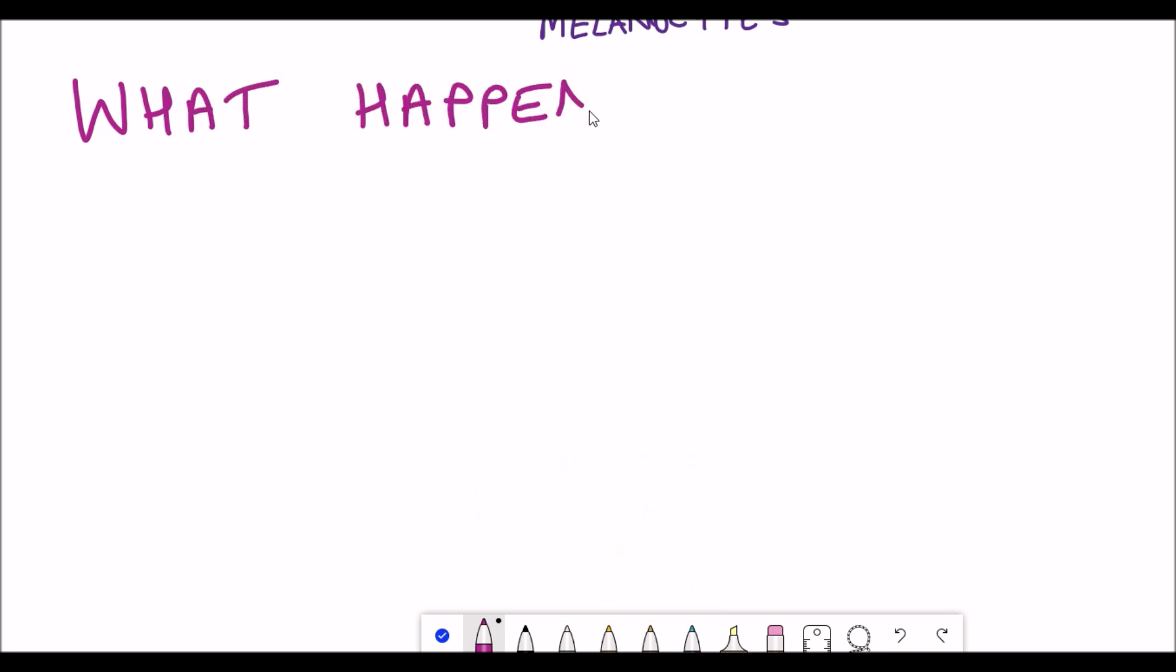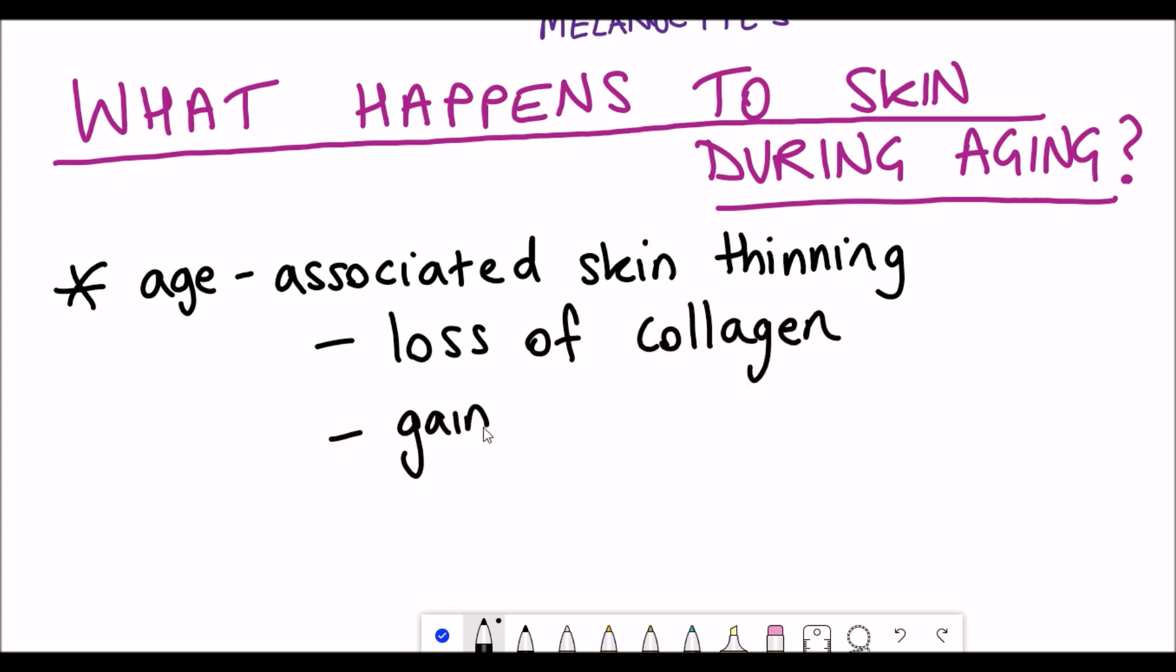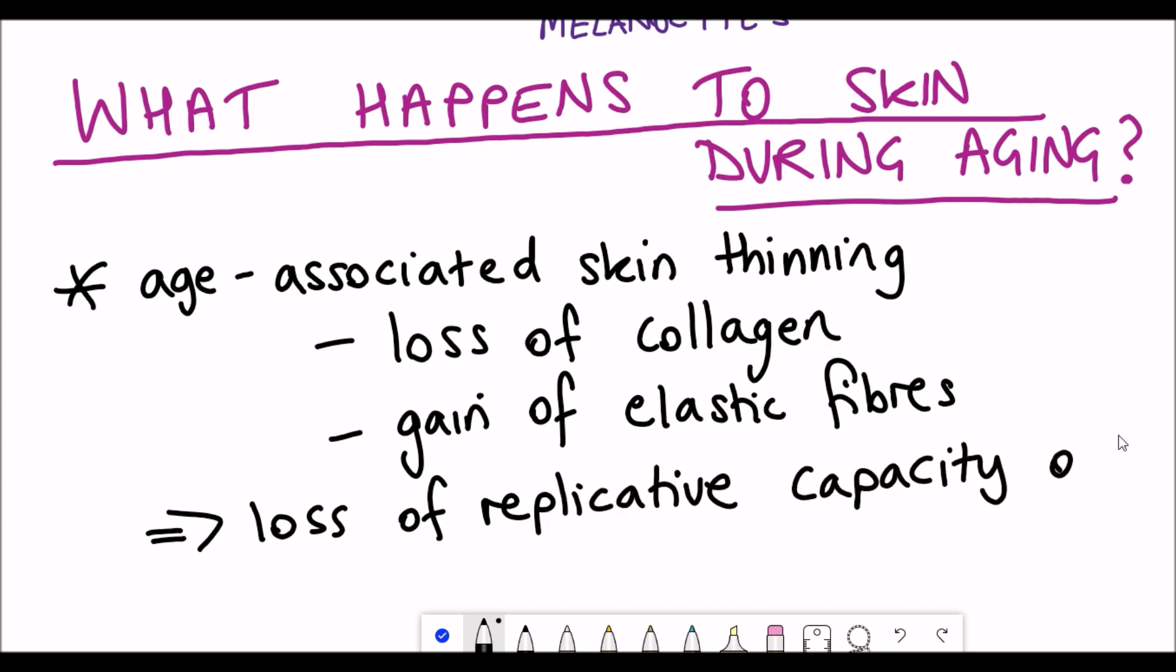So what happens to the skin during aging? Well, there is an age-associated skin thinning and a loss of collagen and a gain of elastic fibers. The reason why this might happen is thought to be due to a loss of the replicative capacity of these keratinocytes so that regeneration and repair of the skin layer becomes defective.